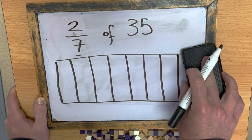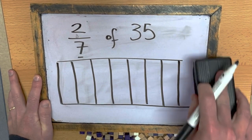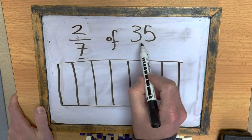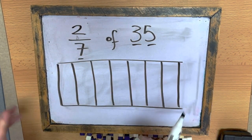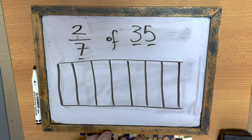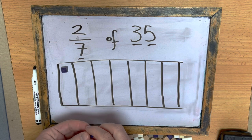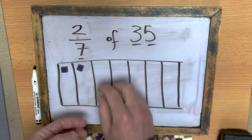Seven, and I'll rub that bit out. Okay, now I need to get 35 objects and count them out and put them equally into each section.